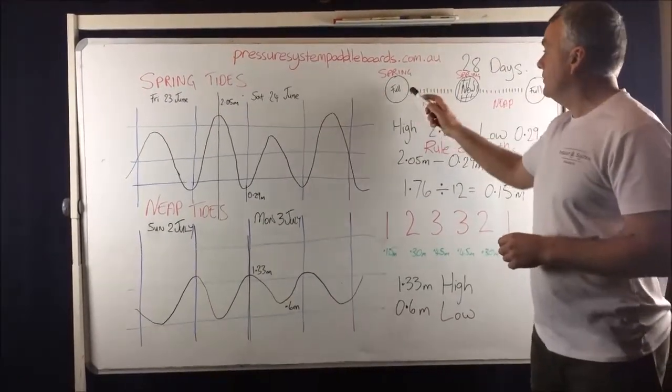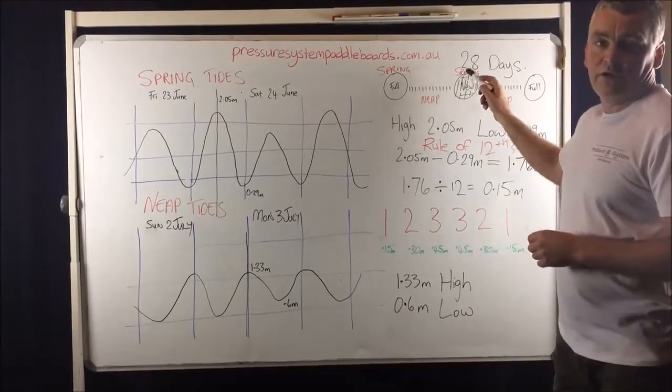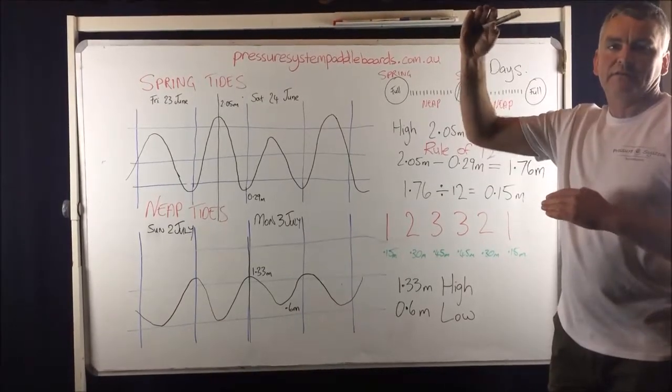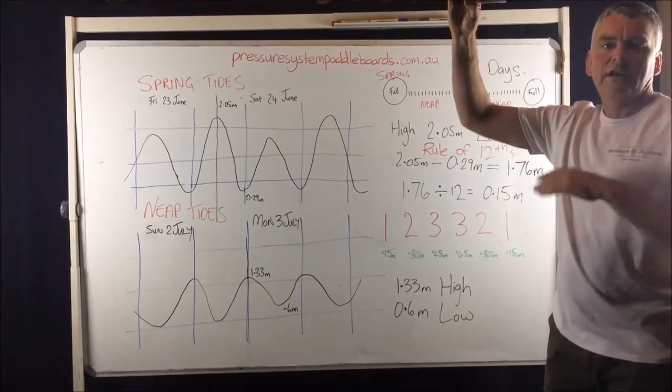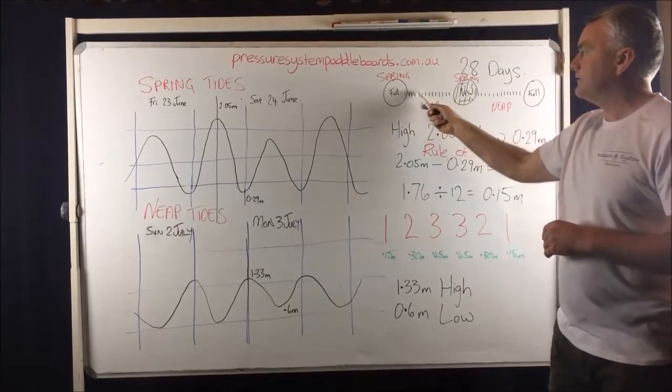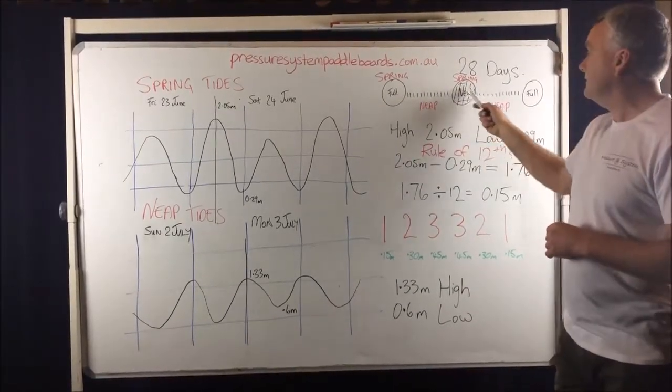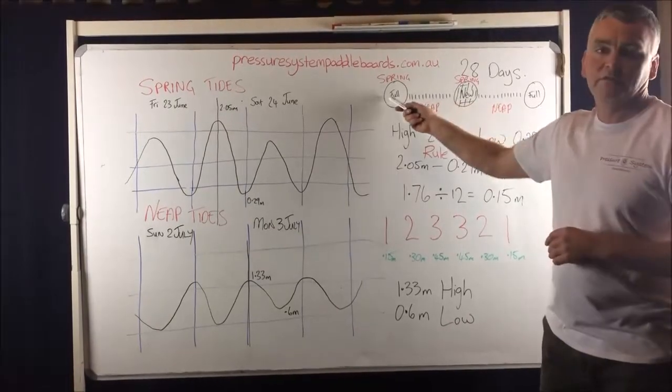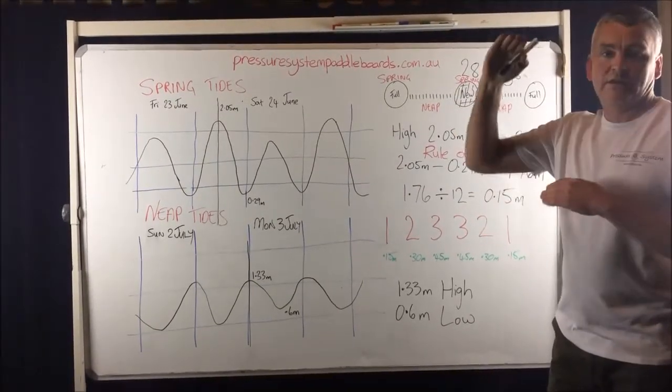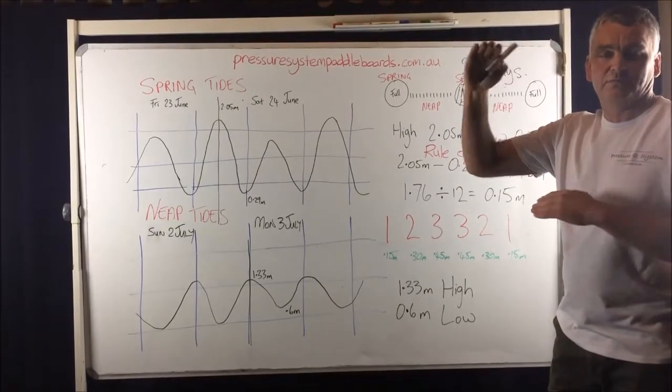Now during the full moon and the new moon or the no moon, that's when the tides are at their greatest. So we have the highest highs and the lowest lows. This period lasts for about a week. During the new tide and the full moon, they are known as spring tides. So that period of really high highs and low lows is called the spring tide period. And I've got a bit of a diagram here that I'll explain to you.